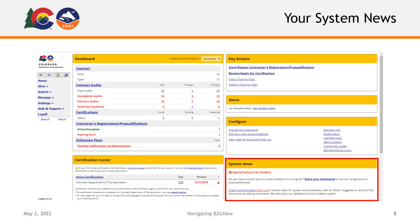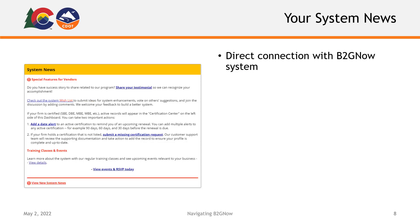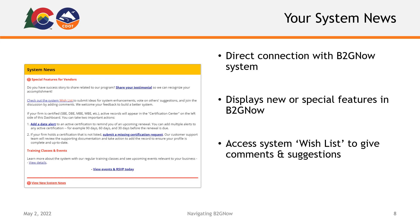Also on your homepage, you will find the System News section. This is your direct connection to the B2GNOW system. This section will display any new or special features in the system available to you as a user. You can access the System Wishlist where you can give B2GNOW suggestions and requests for features in the system. This Wishlist system is used by B2GNOW to gauge user feedback and push out new features and enhancements to the system. Here you will also see information regarding training and managing your organization in B2GNOW.